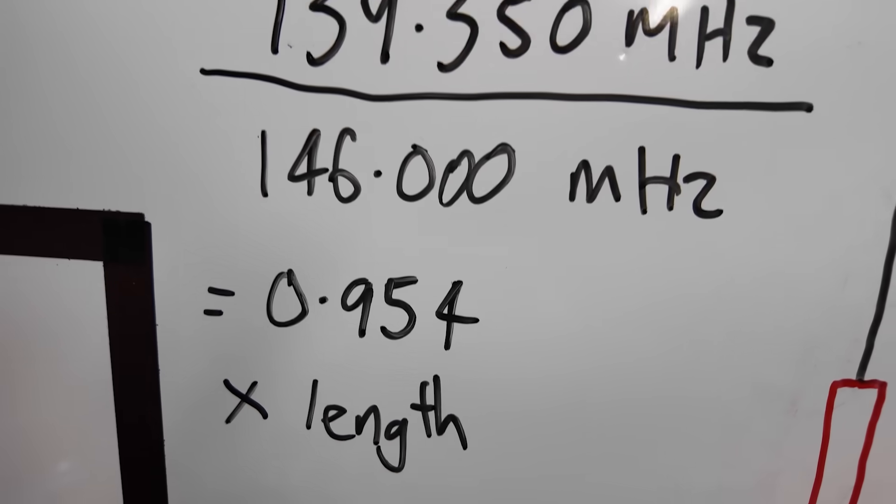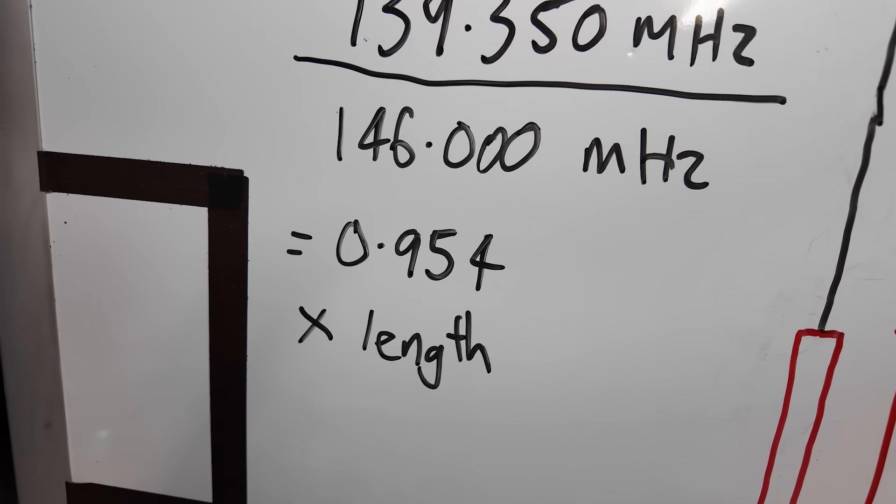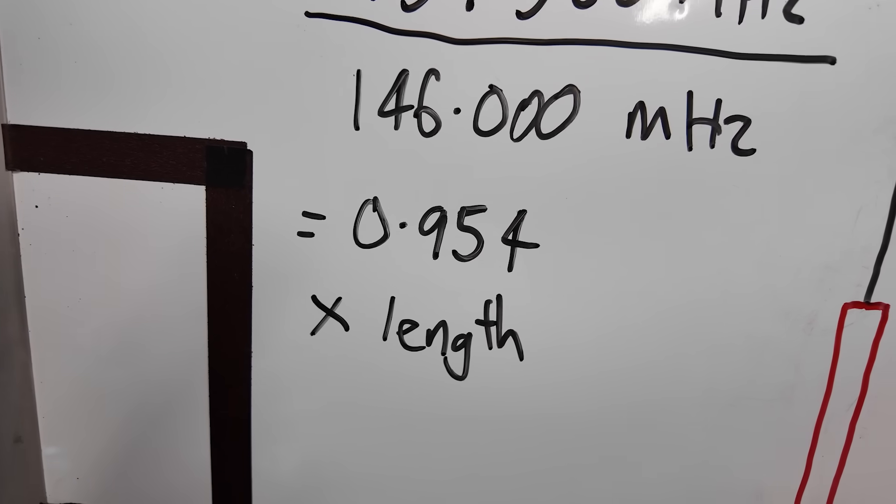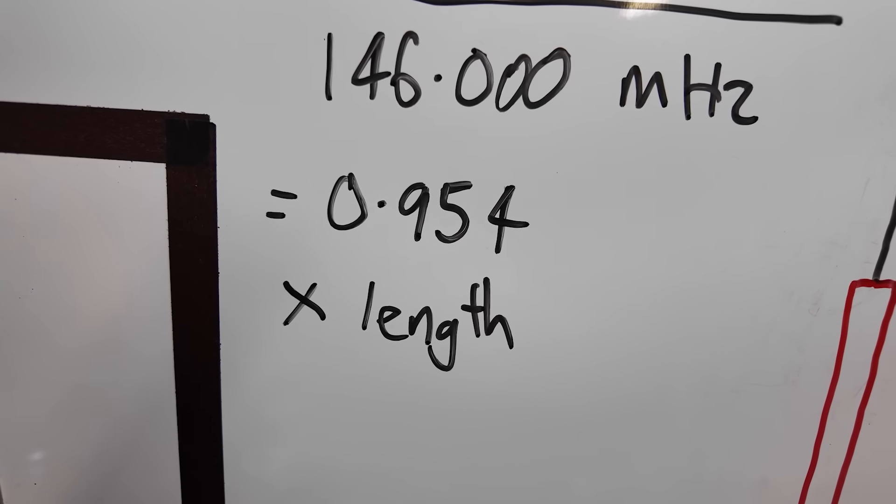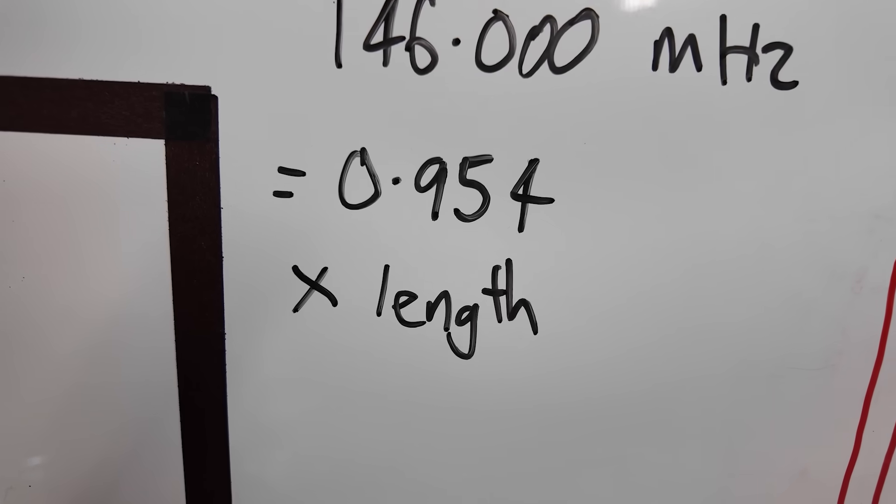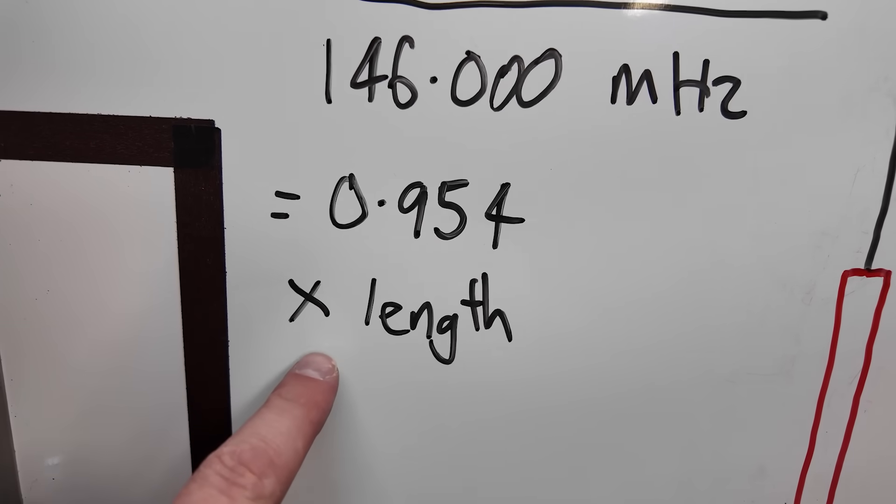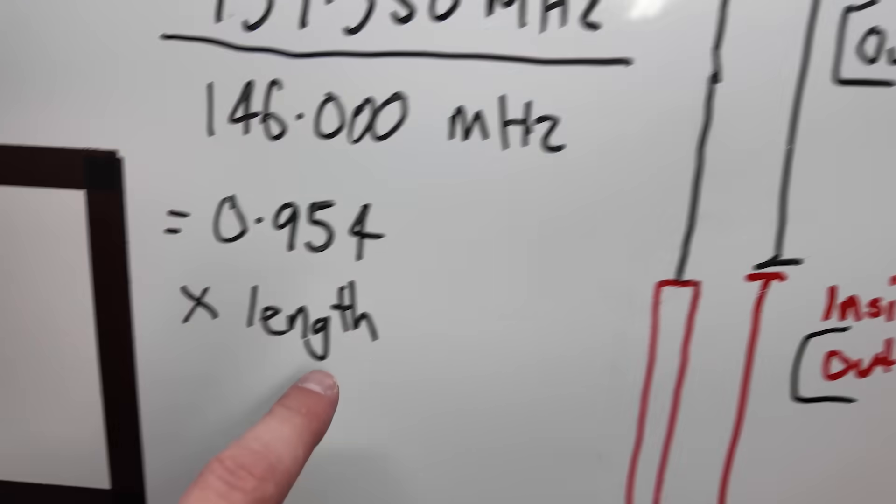Now if you divide those two together, you get 0.954. So basically it means that we need to make it a little bit shorter. So we need to make it about 5% shorter, I suppose, is what that's telling me there. So what you do is you do 0.954 multiplied by the current length that you have.